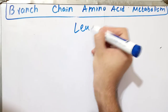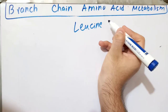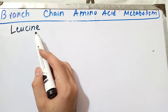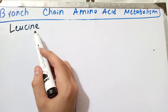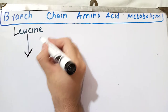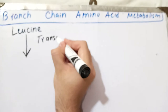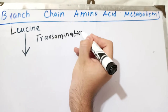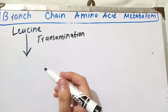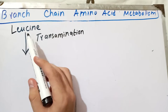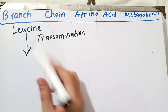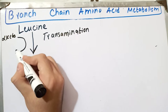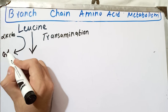Let's first talk about leucine. The first step in the metabolism of leucine, just like all other branched-chain amino acids and most other amino acids, is the transamination reaction, catalyzed by enzymes called transaminases. The amino group present in leucine is donated to alpha-ketoglutarate, and alpha-ketoglutarate, after accepting the amino group, will form glutamate.